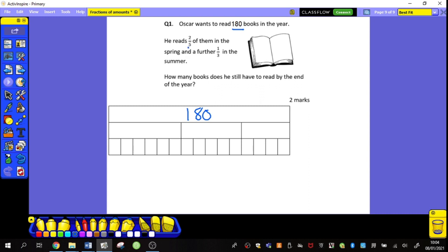He reads two-fifths of them in the spring. So in my bar model you'll see that I've already split it up. I know that two-fifths is going to be there and I'm going to work out what two-fifths are in a moment. And a further one-third of them in the summer. How many books does he still have to read? So if he has worked out the two-fifths bar and the one-third bar, then he's going to have that many left over.